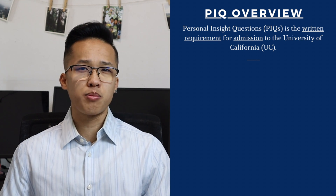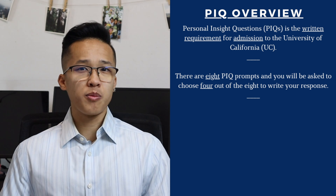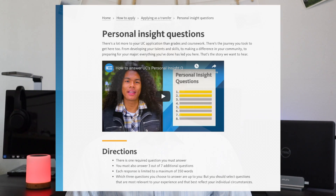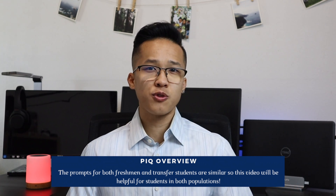The UC Personal Insight Questions or PIQs are just a series of essays that you have to write before you could complete your application to the University of California. The UC system provides you with eight different essay prompts that you have to choose from, and then you'll just choose four to write about and answer. For transfer students, this is going to look a little bit different. You'll actually have one required PIQ that you have to answer, and then from there you'll have seven essay prompts to choose from and just have to choose three to write about. For the purpose of this video, I'll be focusing on freshman admissions, but a lot of the information I provide here should be able to be used for both transfer and freshman students.